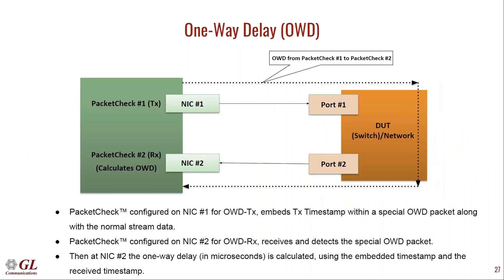Another feature is one-way delay. While RTD tells about the round trip, one-way delay tells what time a packet takes to travel from one side to the other only. This is also possible using Packet Check, but requires two Packet Check instances running on a single system with two NIC interfaces. NIC 1 generates a special OWD packet with a TX timestamp injected to the network, and it is looped back to another Packet Check instance running on NIC 2 on the same PC. In OWD TX mode on one NIC and OWD RX mode on the other, the application receives the packet and calculates the one-way delay.